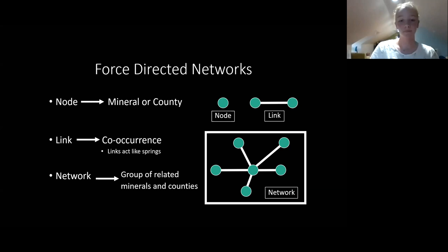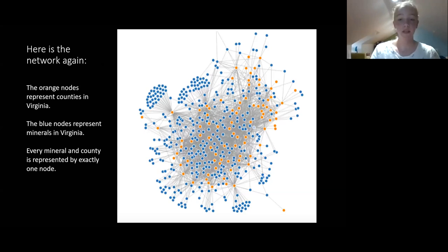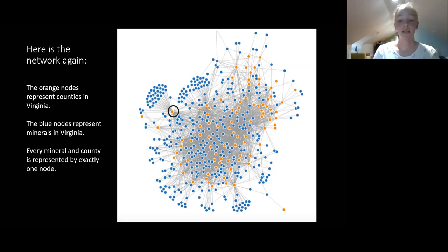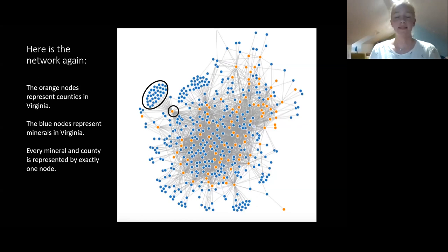A network would be a group of related minerals and counties. Here the network is again, all the orange nodes represent counties in Virginia, and all of the blue nodes represent minerals in Virginia. Every mineral species in county is represented by exactly one node on this network. For example, this orange node here represents Amelia County, and all of these blue nodes represent the mineral species that are found there. Those ones that I've circled are just found in Amelia or only recorded in Amelia. All the other ones, if you can see these small links here, are all over the network.